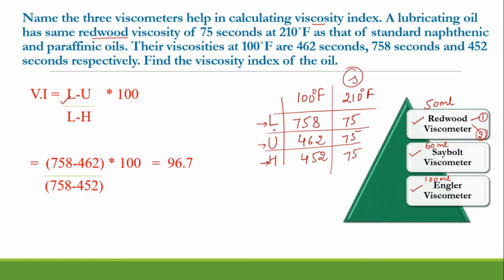L obviously refers to the low viscosity index oil, and you must use the values at 100°F — using 210°F makes no sense because all values are the same there. If you compute 75 − 75 over 75 − 75 that gives nothing useful. The three values at 100°F are what matter, so you identify L, U, and H, substitute them into the formula, and you get your answer very easily.